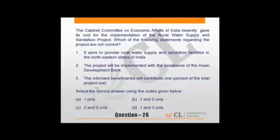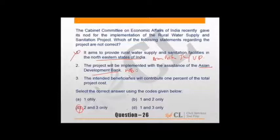Cabinet committee on economic affairs recently gave nod for implementation of rural water supply and sanitation project. Which statements are not correct? It aims to provide facilities in northeastern states of India - is it northeastern? Not just that, it's low-income states including Assam, Bihar, Jharkhand and Uttar Pradesh. So when first goes wrong, we have this option rejected: 1 only, 1 and 2, 1 and 3. The project will be implemented with assistance of ADB - it's not ADB, it's World Bank. So 1 and 2 both are wrong, B stands correct. For this question, the data must be known. You cannot analyze much. If you don't know, skip the question.